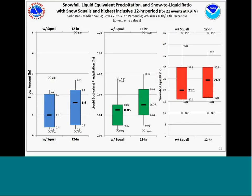Using a contract weather observer, we gathered additional information for 21 events that affected Burlington, Vermont specifically. The snow amount associated with the squalls for the 12-hour period inclusive was 1.6 inches at the median, confirming they are sub-advisory events for our forecast area. In terms of precipitation, the liquid equivalent is only about 5 hundredths of an inch — not something that typically grabs the attention of forecasters on shift. The snow-to-liquid ratios tend to be high in these cases, with a median of 31-to-1, consistent with west-to-northwest flow producing dry, fluffy snow.